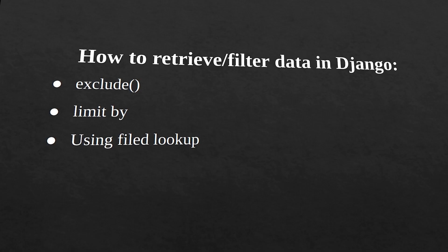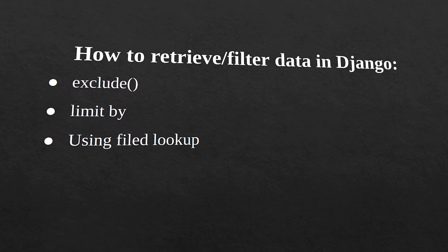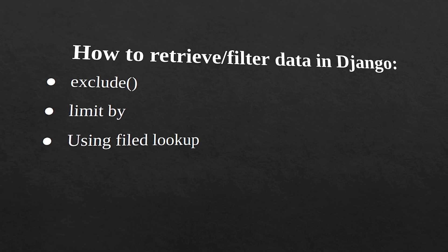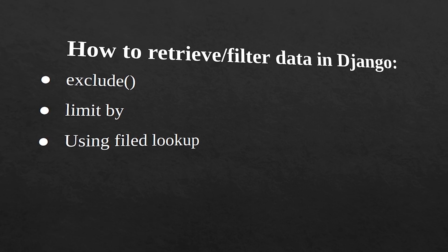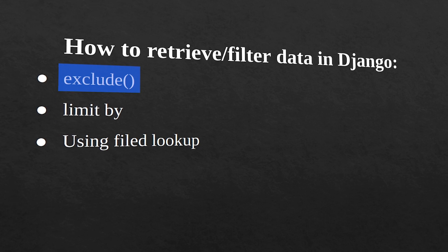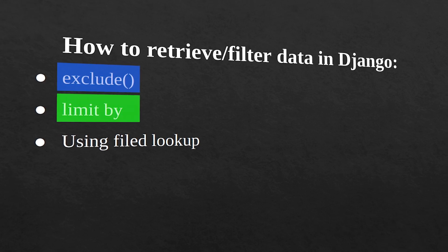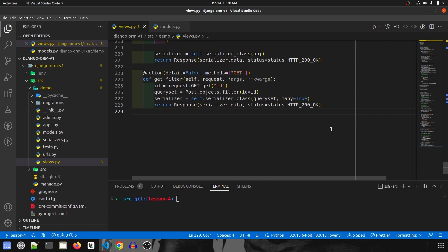Hey guys, welcome to Part 6 of the Django ORM series. In this one we are going to look at how to filter or retrieve data and use some features of Django like exclude, how to limit data in Django, and how to do field lookups. So let's get started — I'm going to continue from the last video.